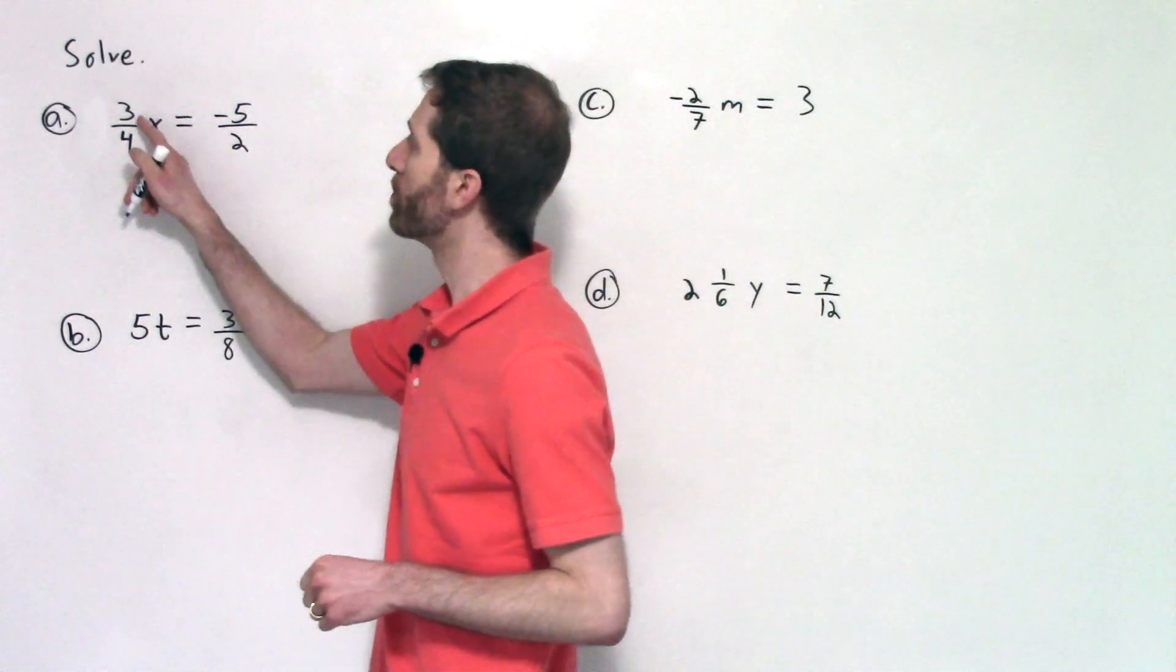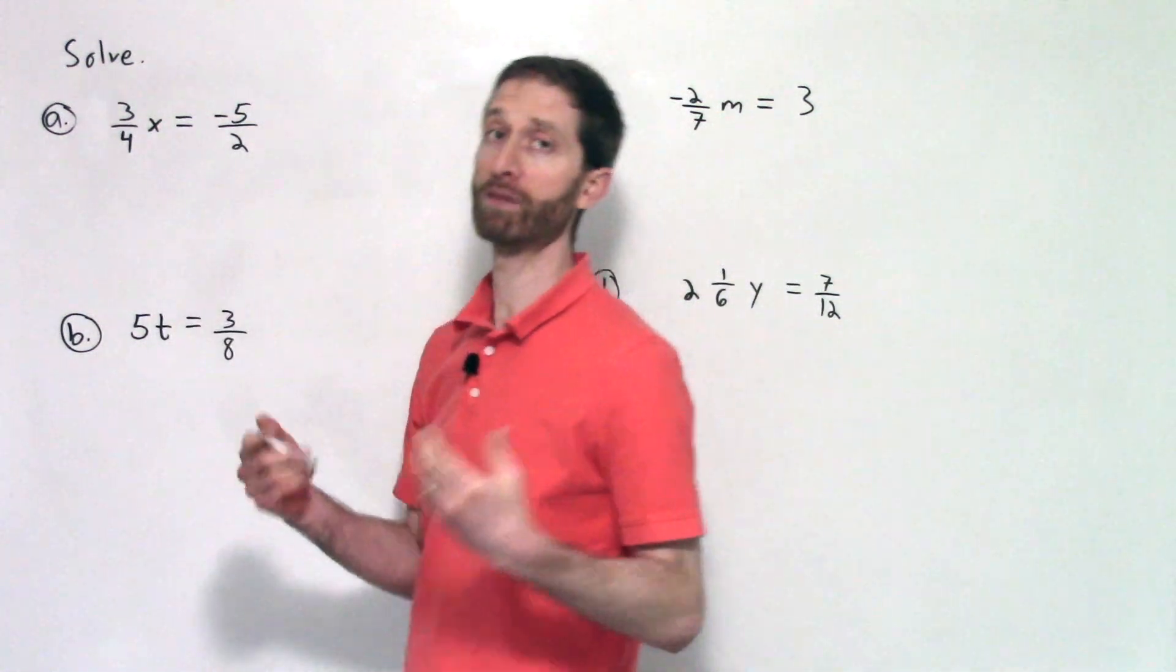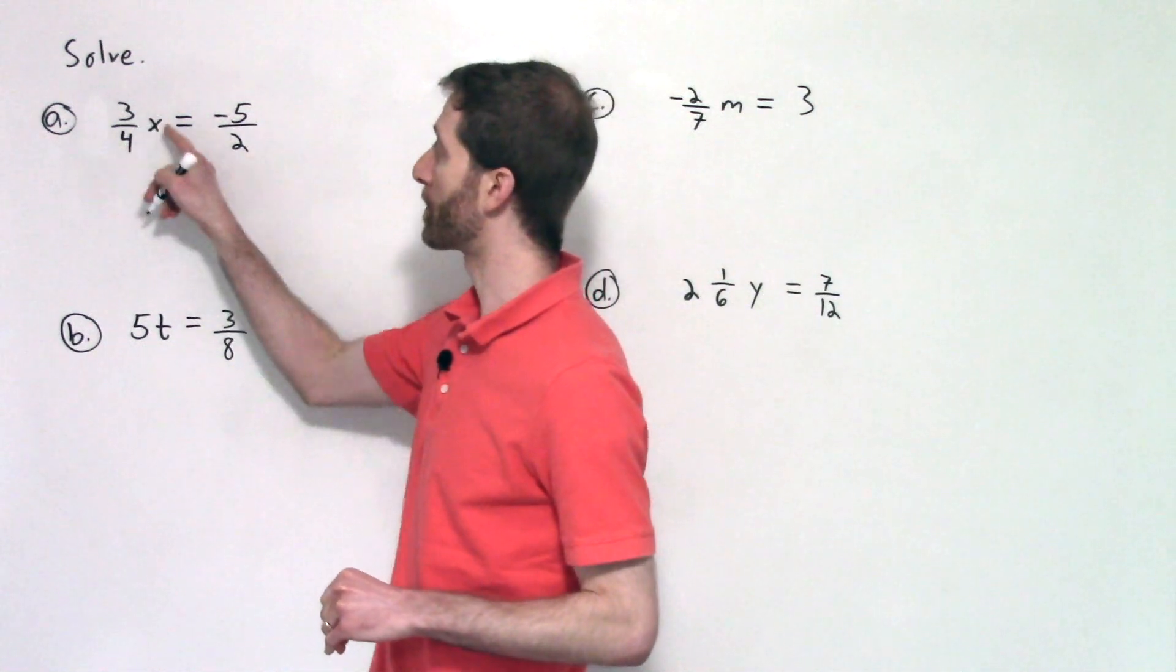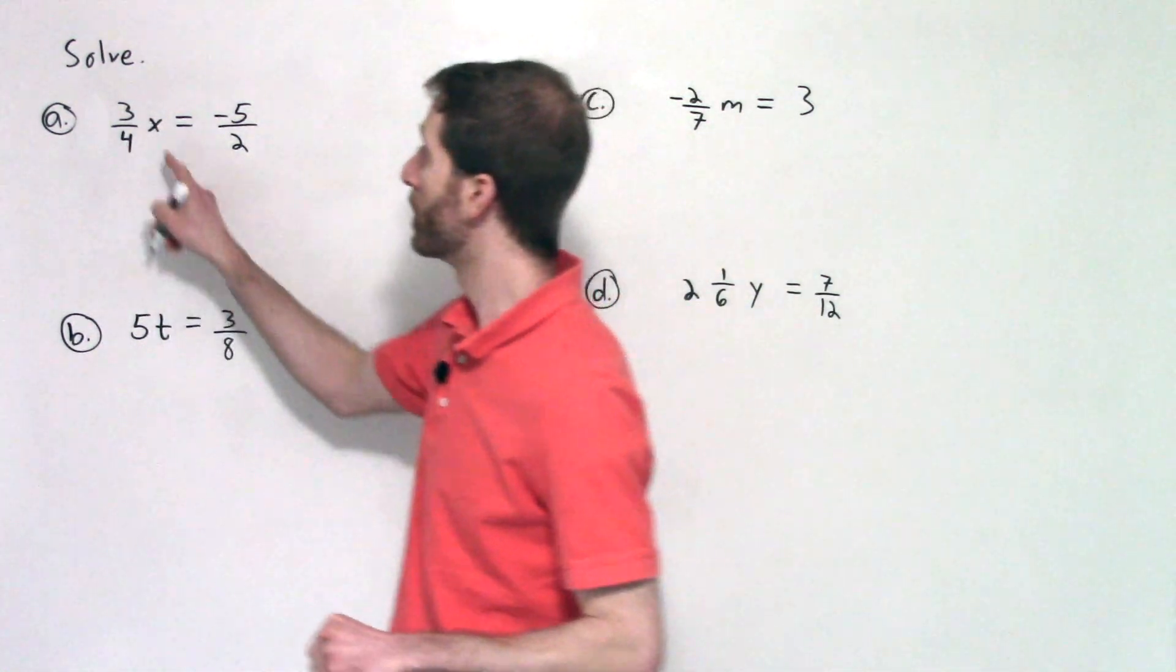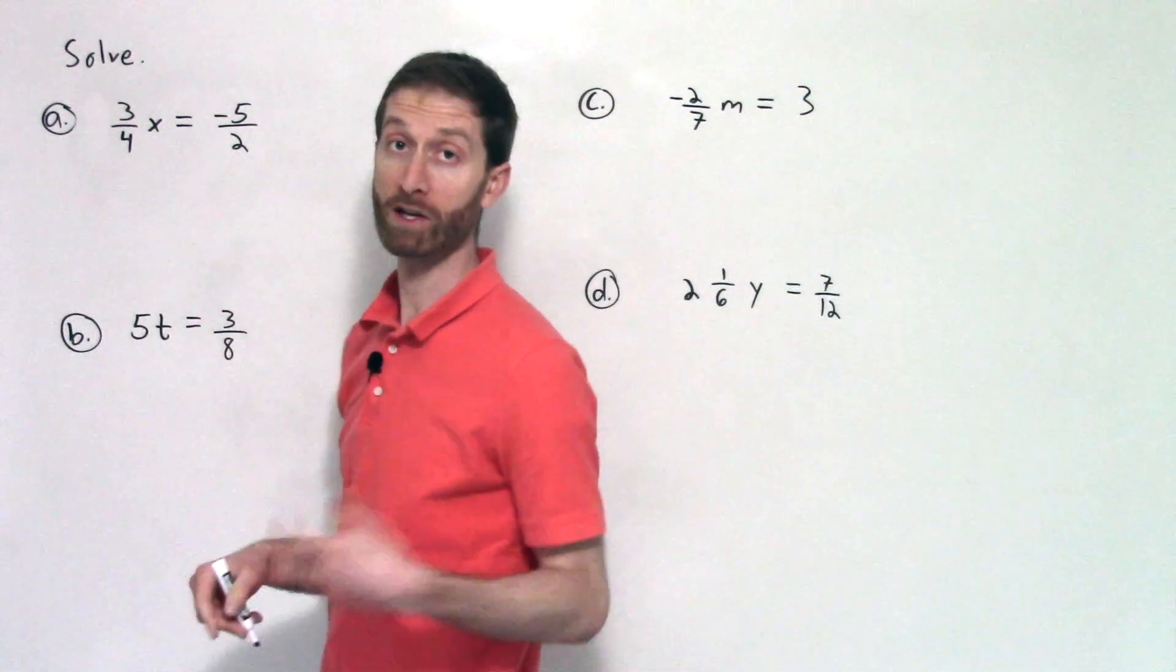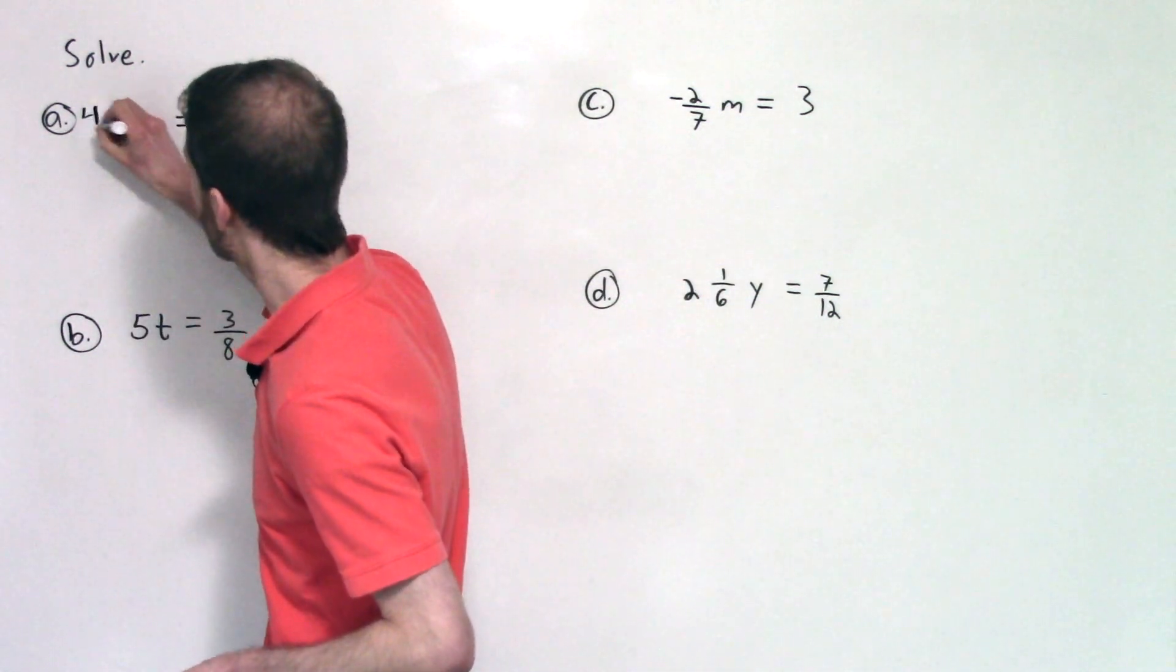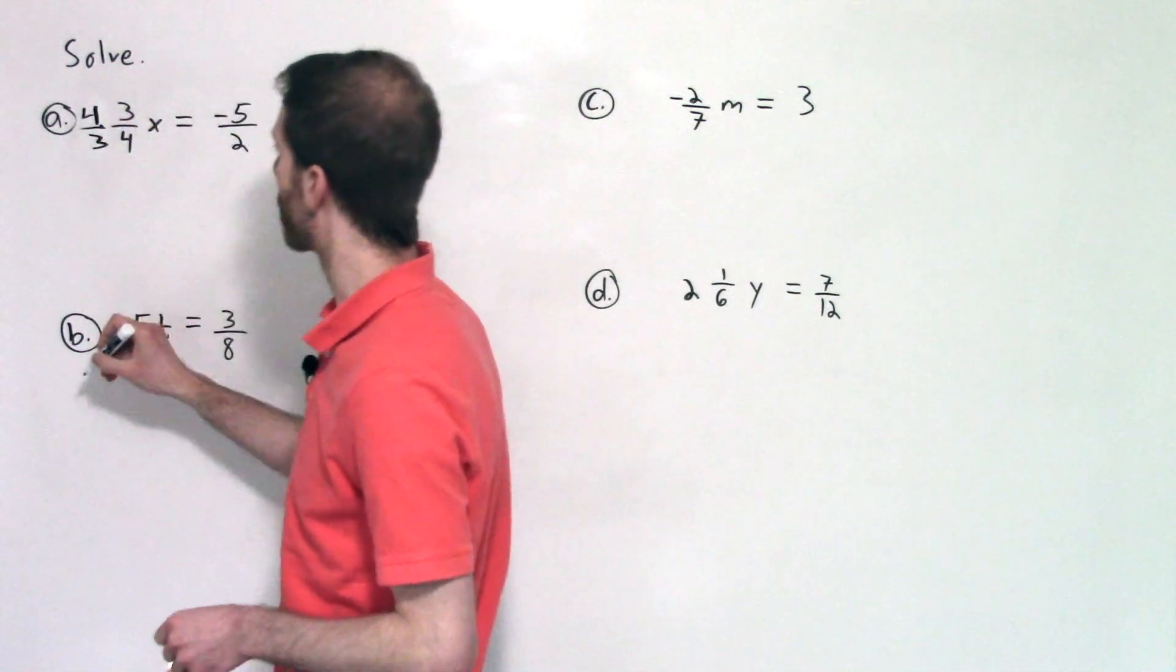So we want to undo three-fourths times x equals negative five halves. To do that I'm going to multiply by the reciprocal of what's being multiplied by our variable. That will undo the over four and the multiplication by three. So I multiply by four-thirds. That would be the reciprocal of three-fourths.